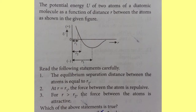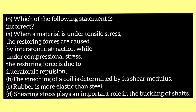The next question: the potential energy of two atoms of a diatomic molecule as a function of distance R between atoms is shown in the given figure. Statement 1: the equilibrium separation distance between the atoms is equal to R2. Statement 2: at R equal to R1, the force between the atoms is repulsive. Statement 3: for R greater than R2, the force between the atoms is attractive. Which of the above statements is true? Option A one only, option B two only, option C three only, option D two and three. The answer is option B, two only.